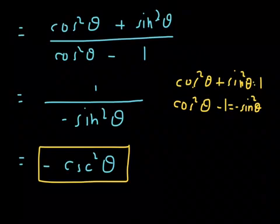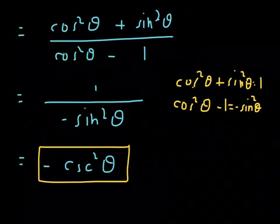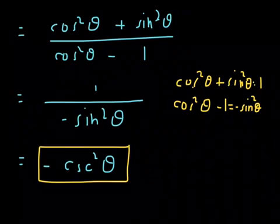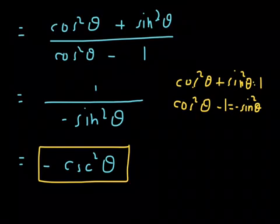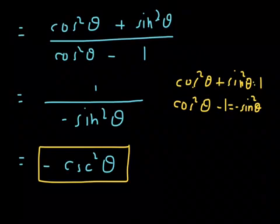This completes Chapter 5, Section 1: Fundamental Identities. The next section, 5.2, is entitled Verifying Trigonometric Identities. I'll see you in that video.